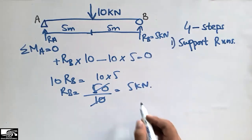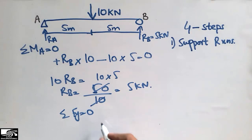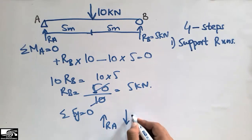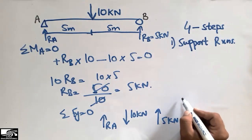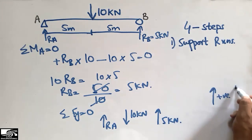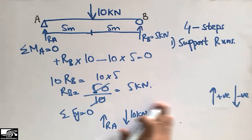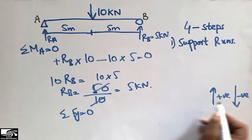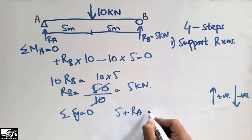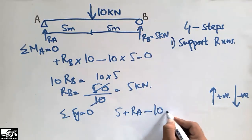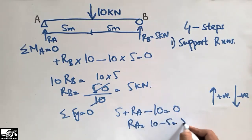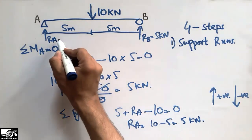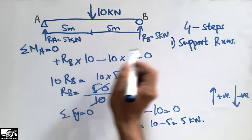Similarly, if we do the summation of FY equal to 0, the vertical loads are: RA acting upward, the 10 kilonewton load acting downward, and RB acting upward which is 5 kilonewton. Upward loads are positive and downward loads are negative. So RA + 5 − 10 = 0, giving RA = 5 kilonewton. The 10 kilonewton is evenly distributed between the two supports RA and RB.